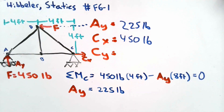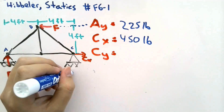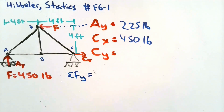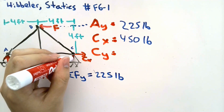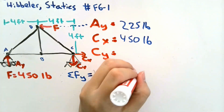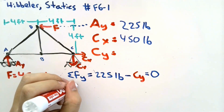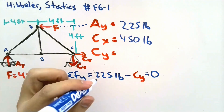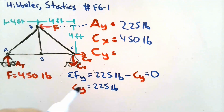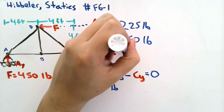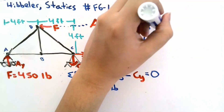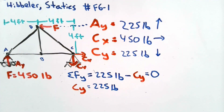So we found our force Ay. Now we can apply the sum of forces in the y direction to find the reaction force at hinge C in the y direction. In the y direction, we have our force Ay of 225 pounds, and in order for the system to be in equilibrium, the reaction force at the hinge has to be pointing in the negative direction. So Cy is equal to 225 pounds. We already drew our arrow pointing in the negative direction, so there's no need to add a negative sign. So we found our reactions at both supports.